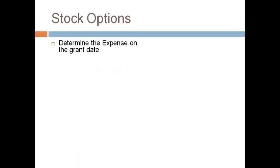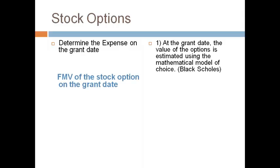The total value of stock options and the annual expense is determined on the grant date. These values are not adjusted for changes in fair market value after the grant date. The company determines the value of one stock option using a quant model, such as the Black-Scholes model, that considers the price of the stock, the historical changes of stock, dividends, current interest rates, and other factors. You will not be expected to determine the fair market value of a stock option in this class, and it will always be given to you.